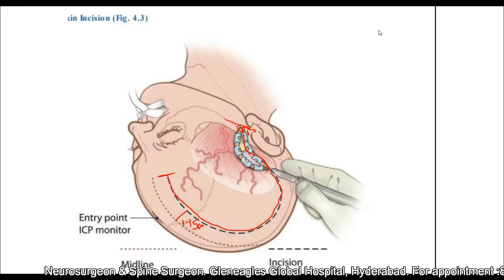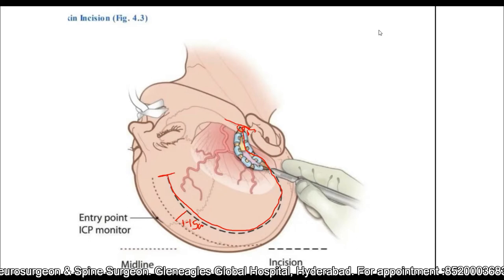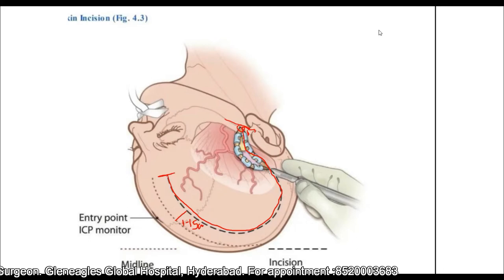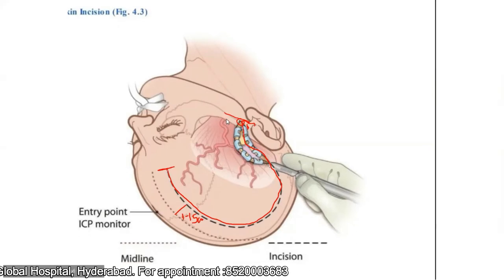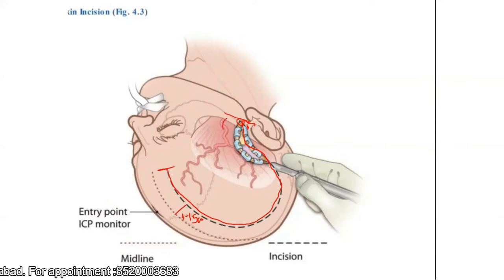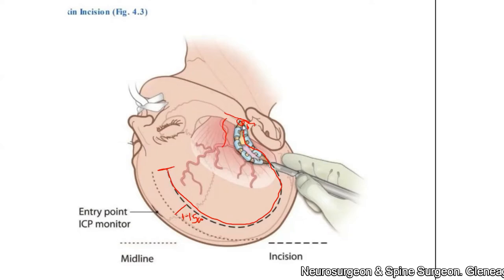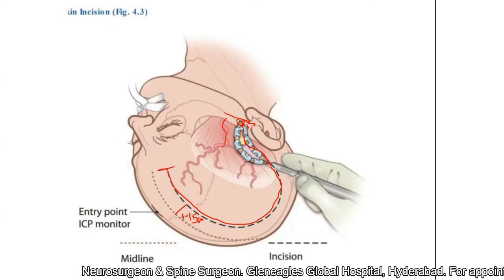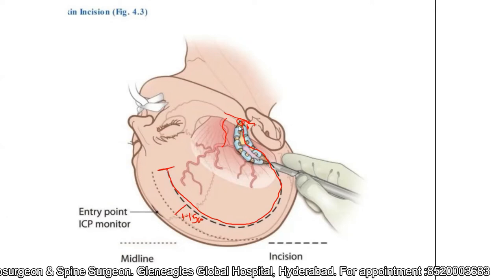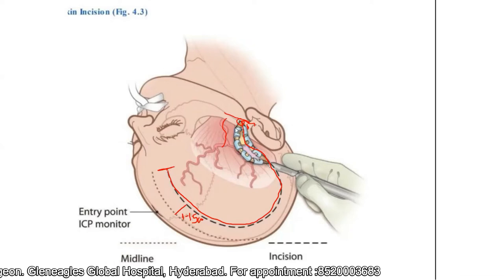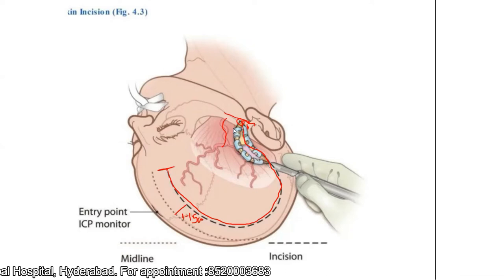One more precaution when you are taking the incision: this is the superficial temporal artery. In majority of the cases, particularly when the patient is lean, you can palpate the superficial temporal artery. When you are designing an incision, take it in such a way that you are going to spare the superficial temporal artery. That enhances the viability of the flap.